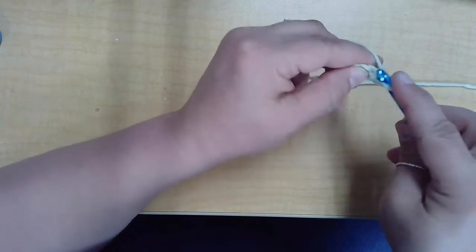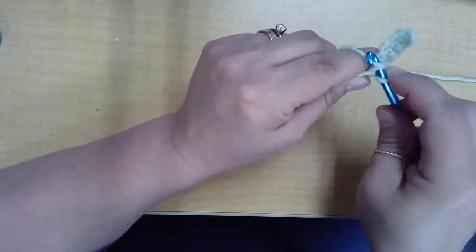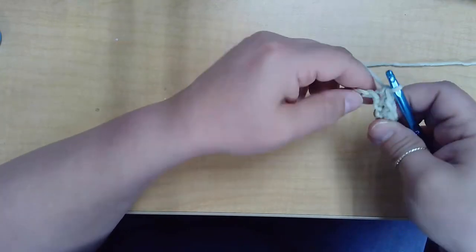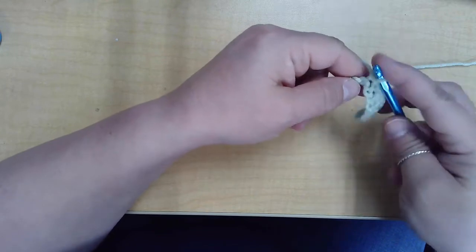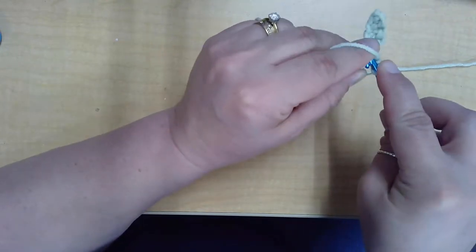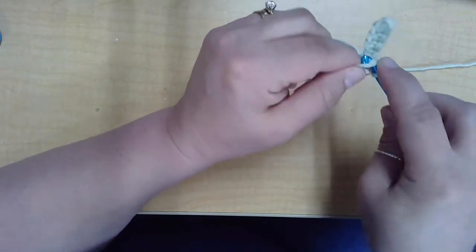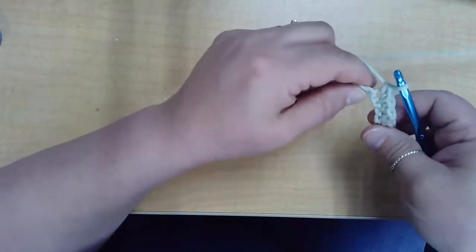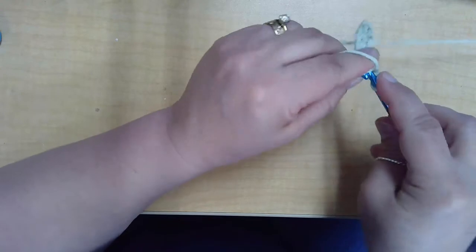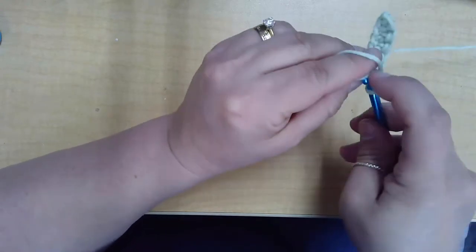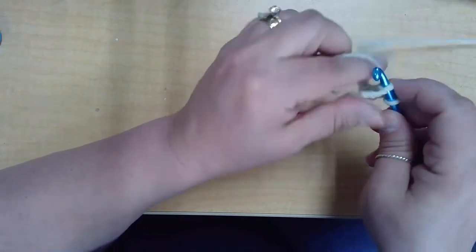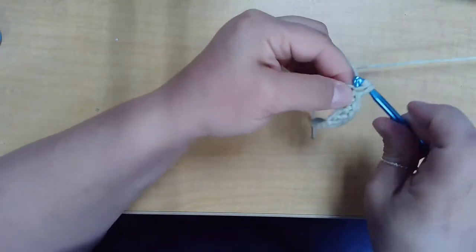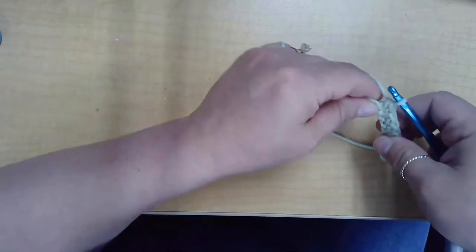Into the next space, yarn over, pull through, yarn over, pull through two loops. And we're going to keep going until we reach the end. And then I'll show you how to turn.